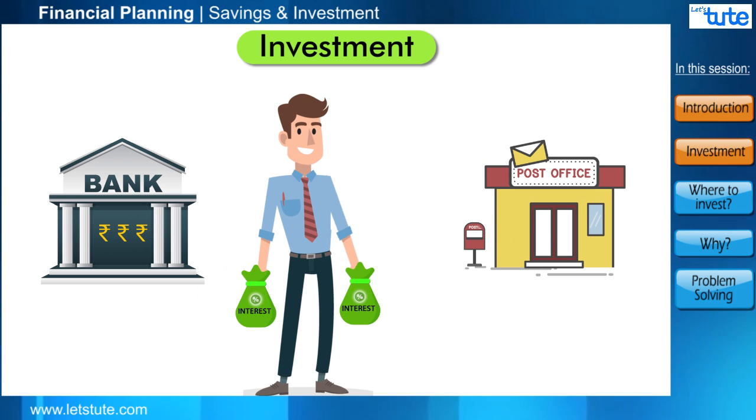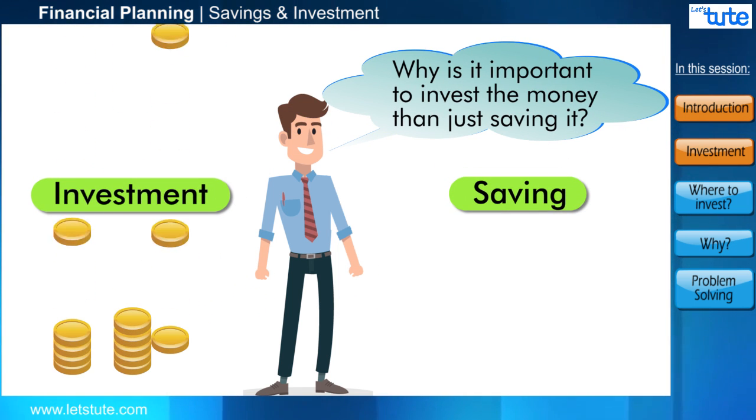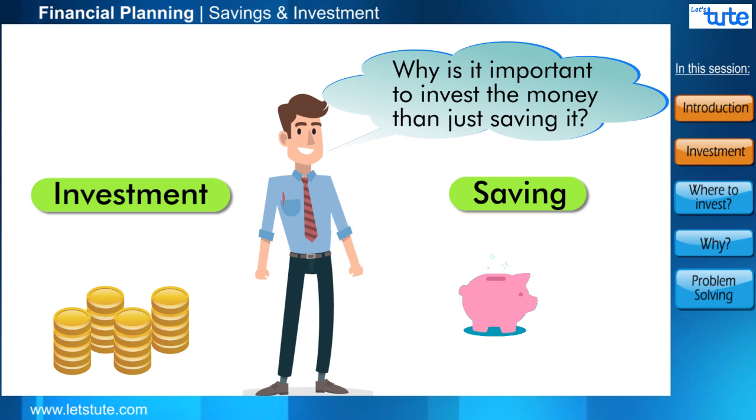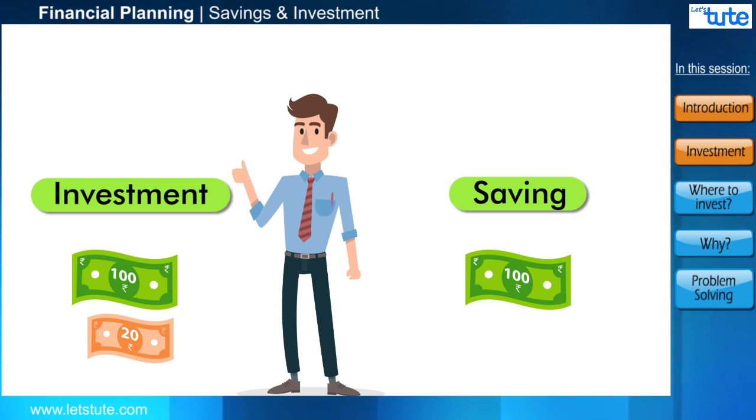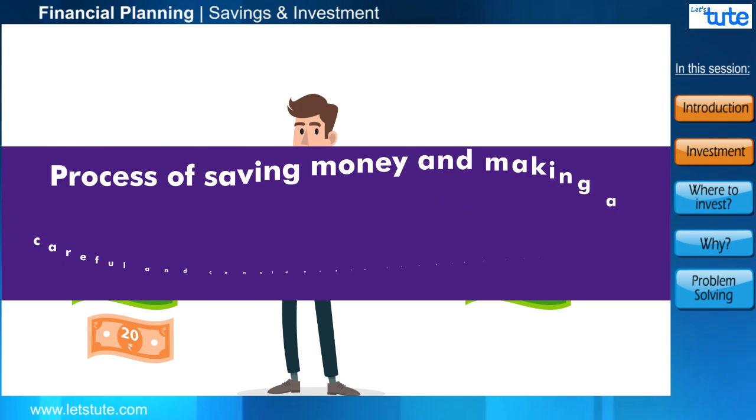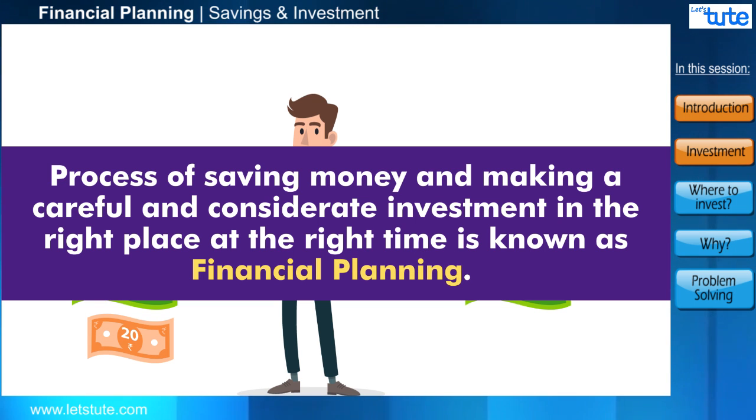When you put your money in a bank or post office for a year or two to get good returns, it is known as investing your money. Now, why is it important to invest the money than just saving it? Well friends, would you prefer 100 rupees now or 120 rupees in two days? A lot of you must have said 120, and that's the benefit of investing. You get a good return. This entire process of saving money and making a careful and considerate investment in the right place at the right time is known as financial planning.